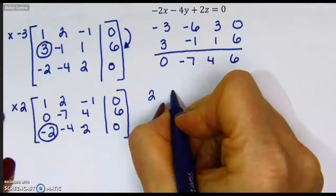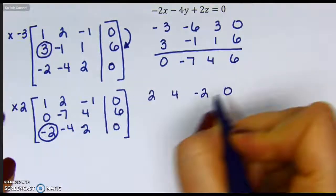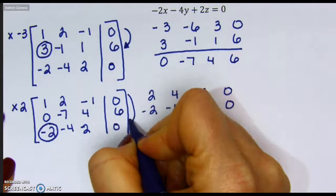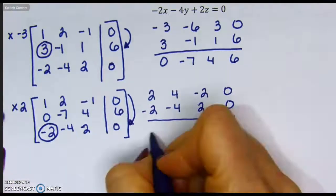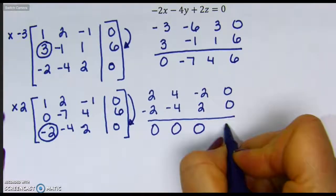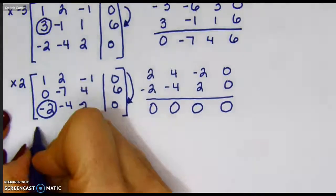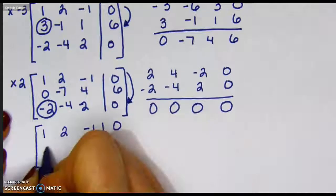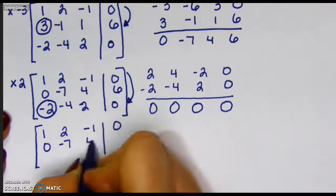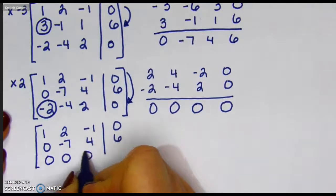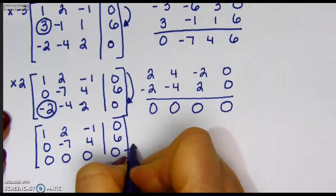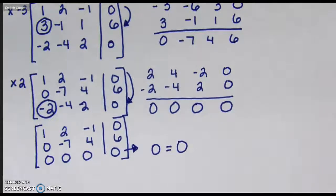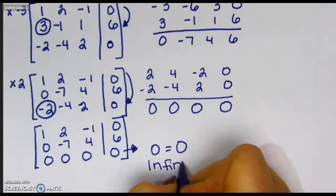Multiplying that top row by 2, we have 2, 4, negative 2, 0. Nothing is changing on the bottom. We're adding down to replace that bottom because we need our 0 to be in the negative 2 element spot. And we see something interesting happen here. Once I added, I ended up with 0s along the bottom. And we know that 0 certainly does equal 0. That's a true statement. So we can say this one has infinite solutions.